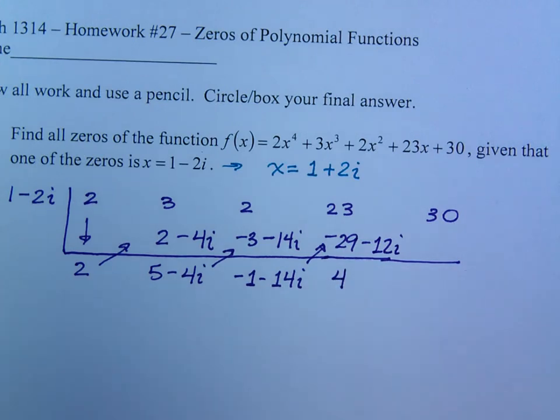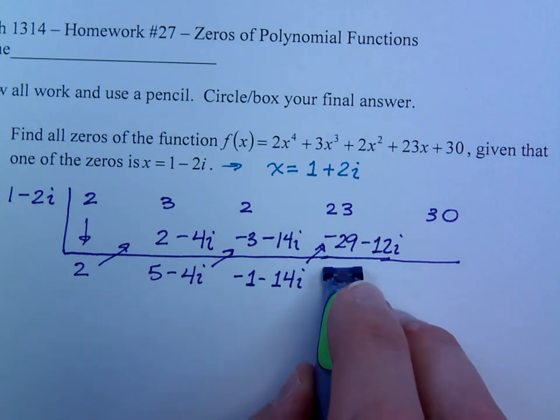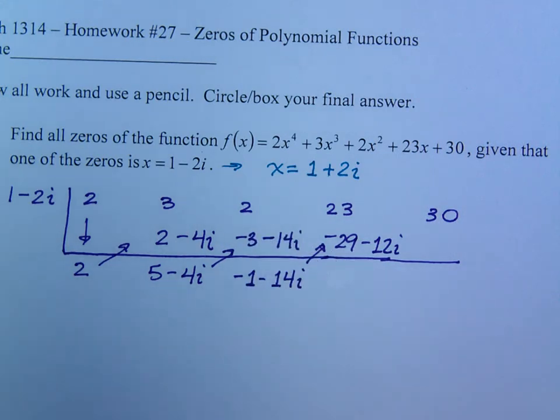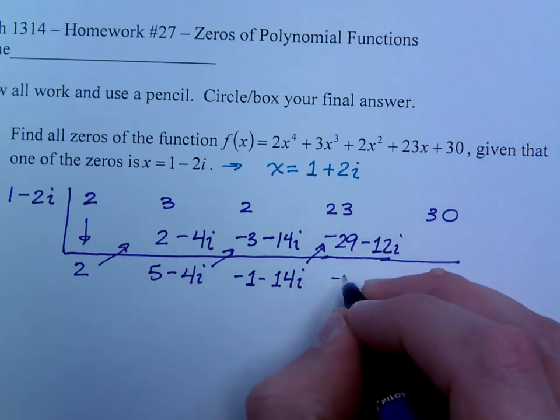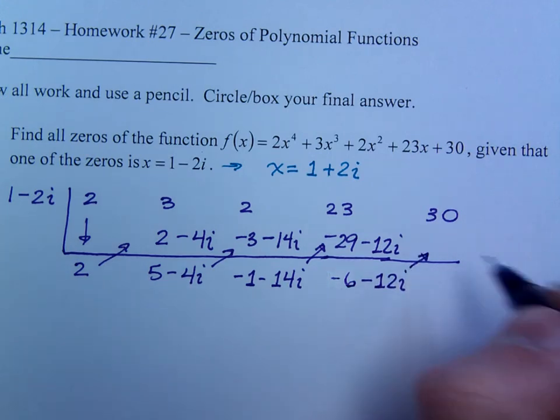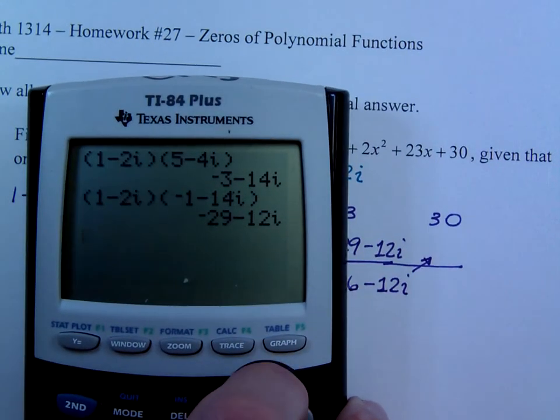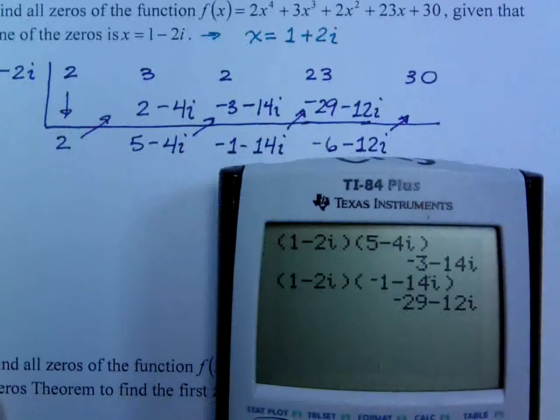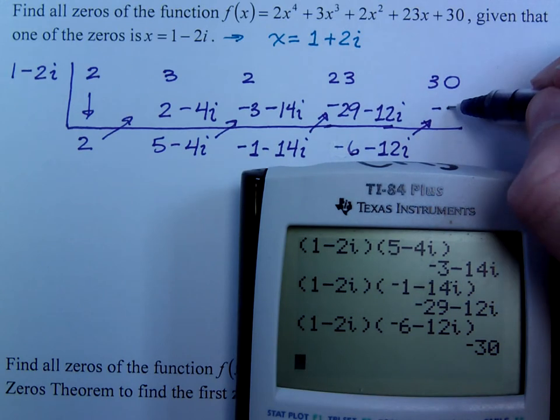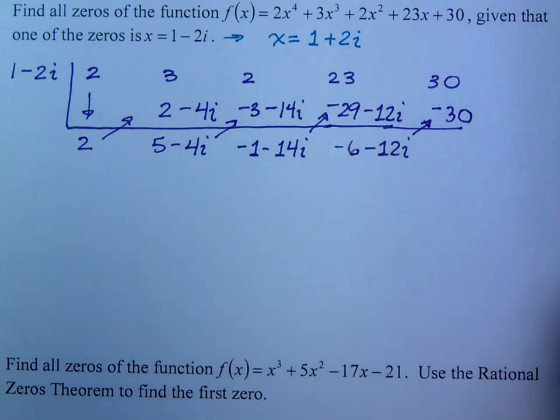Negative 29 minus 12i, and that gives me 4. Where did I get 4 from? See, you guys weren't paying attention. Now, I've got to correct on a video. What am I paying you guys for? I'm not. Oh, you need to go talk it up with a union boss. So, this is negative 6 minus 12i. So, one more multiplication should take care of this.